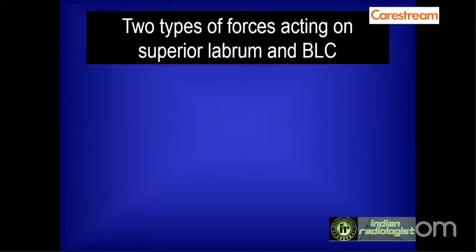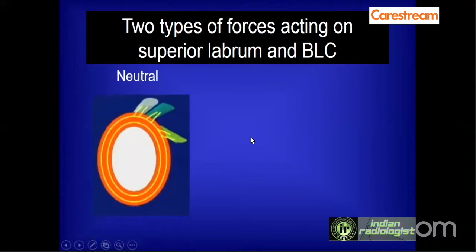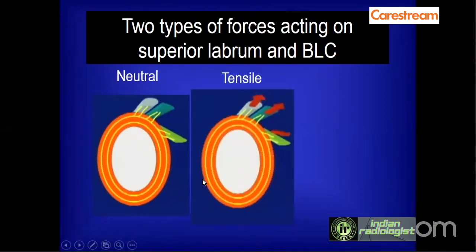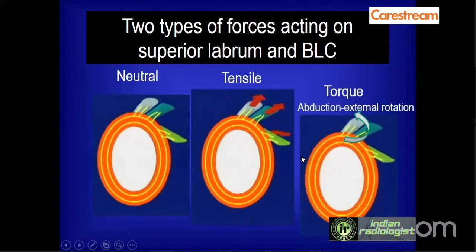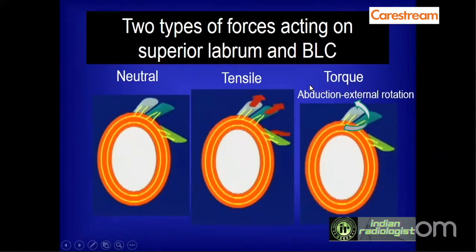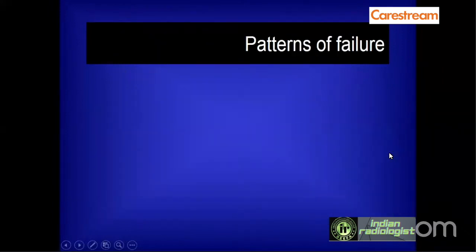When dealing with SLAP lesions, there are two types of forces acting on the superior labrum and the biceps labral complex. One type is the tensile force, which acts almost perpendicular to the axis of the superior labrum and tries to separate the labrum from its glenoid attachment. Another type is the torque force, exercised during abduction and external rotation movement, which in excess can cause different types of injuries labeled as SLAP lesions.